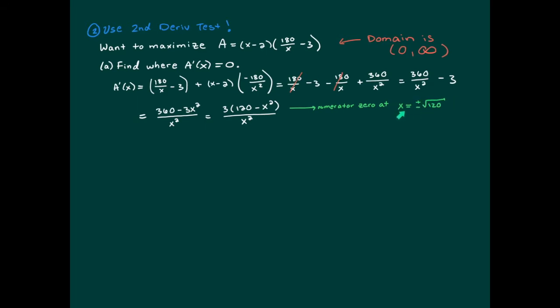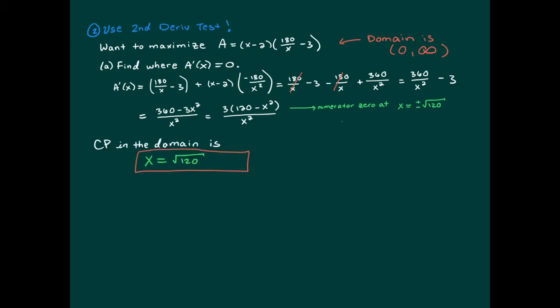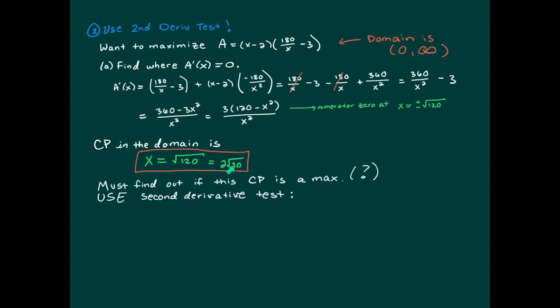The first derivative equals zero at x equals plus or minus the square root of 120. Since x represents the width of the poster, it must be positive, so we exclude the negative root. Our only critical point is x equals positive square root of 120, which simplifies to 2 times the square root of 30. We've found where the first derivative is zero, but we still need to determine whether this is a max or a min.